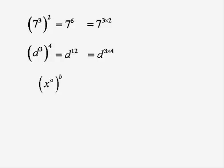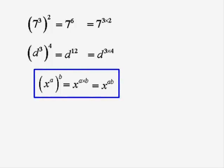So the rule is that x to the a all to the power of b is just got by multiplying the powers. x to the power of a times b, or x to the power of ab. And that's the rule that has to be remembered here. If you've got a power of a power, you just multiply the two powers.